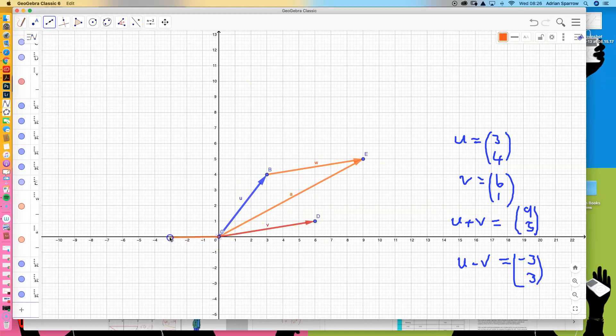Minus 3, then up 3 brings me to there. That would be the same as taking vector u and then doing the opposite of v. Instead of going along 6, we're going to come back 6 and down 1, and we end up in the same place.